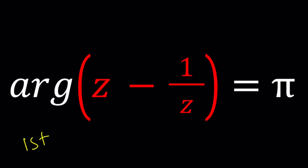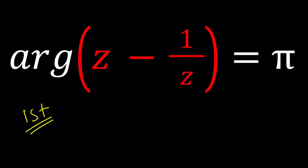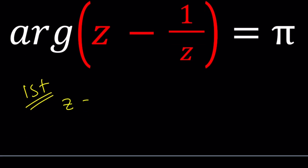For my first method, I would like to use what I usually use: Z equals — what's the name of this channel? A plus BI. So let's replace Z with A plus BI and see what happens to Z minus 1 over Z. Let's find out and we're going to plug it in.